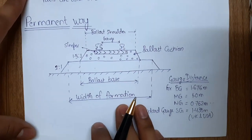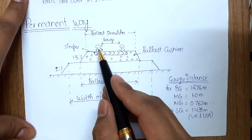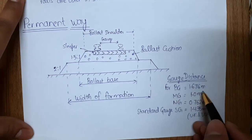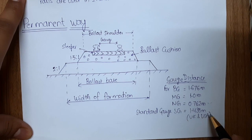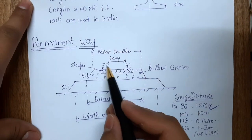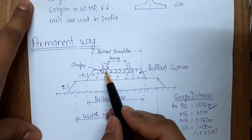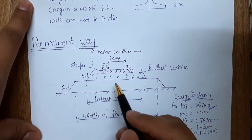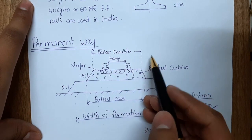Now we will understand the permanent way and how it looks. The rails — usually flat footed rails — are placed, and the distance between the inner faces is called the gauge distance. For broad gauge it is 1.676 m, for meter gauge it is 1 m, for narrow gauge it is 0.762 m, and for standard gauge (used in UK and USA) it is 1.435 m. In India, 1.676 m broad gauge is mainly used. The load is transferred from rail to sleeper, then to ballast cushion, then to subgrade, and finally to the ground.